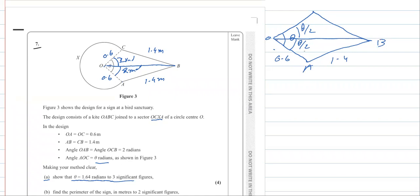To find angle theta, I should consider this triangle and try to find OB first. For OB, if I just consider this triangle with vertices O, A, and B, where OA = 0.6 and AB = 1.4.